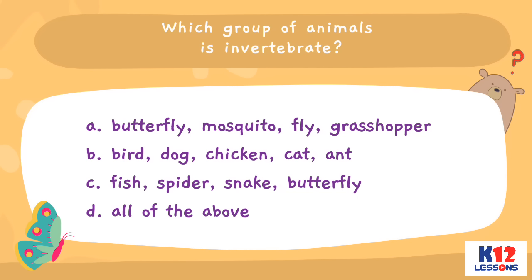Which group of animals is invertebrate? A. Butterfly, mosquito, fly, grasshopper. B. Bird, dog, chicken, cat, ant. C. Fish, spider, snake, butterfly. D. All of the above.